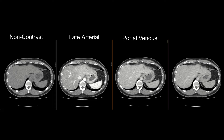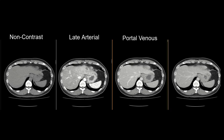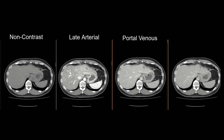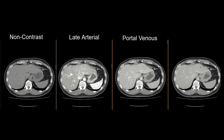Three, we have a portal venous phase acquisition around 75 seconds after injection, with the hepatic veins now opacified. The background liver is also now closer to peak enhancement — so background liver is pretty bright. Four, we have a more delayed or equilibrium phase, acquired a few minutes after injection, with contrast now moving out of the liver and the attenuation of background liver now less than on portal venous phase.